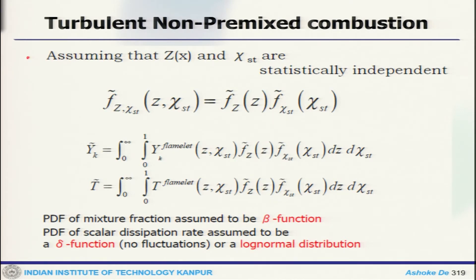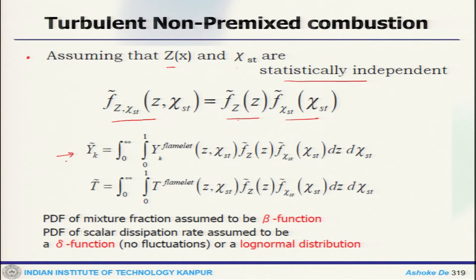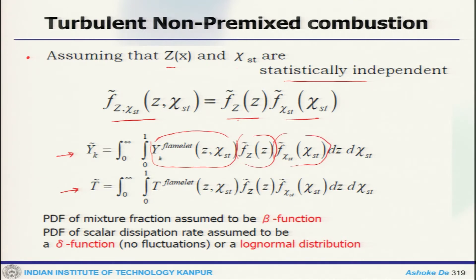If we assume a specific case where Z and stoichiometry are statistically independent, then as we have already seen in the statistical description of turbulence, the joint PDF function — which is a function of Z and stoichiometry — can be written as individual functions: F(Z) and F(stoichiometry).